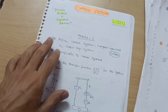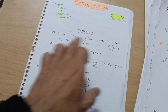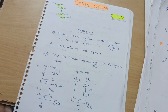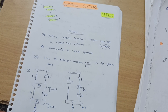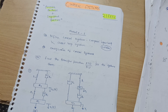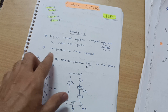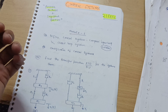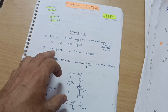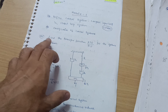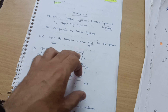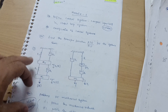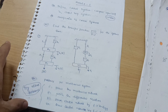Module 1 includes: define the control system, compare open-loop and closed-loop systems — this is a definite question in the examination. You can refer to 18-scheme previous year question papers since 21-scheme module papers are not yet available. Classification of control systems may also be asked. You should also practice problems on finding the transfer function X(s)/F(s) — at least two to three problems.